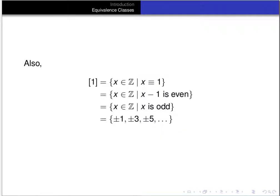Next, we could look at the equivalence class of 1 — that's all integers equivalent to 1, meaning X minus 1 is even. If you're off by 1 from an even number, that means you're an odd number. So the equivalence class of 1 is the set of all odd integers: ±1, ±3, ±5, and so on. It would be a great exercise to calculate the equivalence classes of 2, 3, and so on.